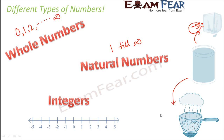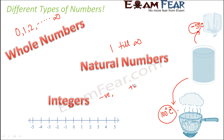When you boil water, after a certain point it starts to boil and the temperature goes beyond 100 degrees Celsius. So 100 is a whole number, 0 is a whole number, but temperatures like minus 5, minus 10, and minus 15 do not fall under whole numbers or natural numbers — they are integers. Integers include all negative numbers, all positive numbers, and zero, which means integers include all natural numbers and whole numbers plus the negative numbers.